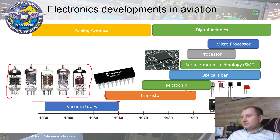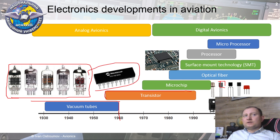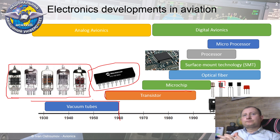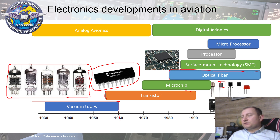A little bit later, approximately one decade was required to pack a small group of transistors into one small scheme, which we call a microchip. These microchips help to reduce size because they use fewer wire connections, since some parts of the scheme are packed together in one small piece of electronic equipment. Next, connected with the 1980s, is the introduction of optical fiber to electronic equipment.